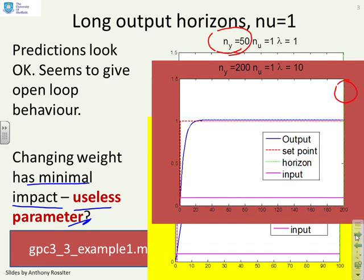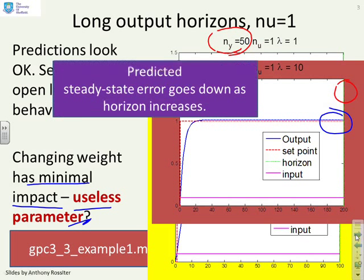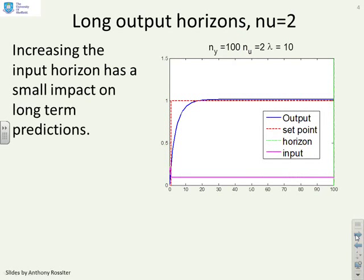If I go to ny equals 200 you'll see that the steady state error gets smaller again. So what are you noticing? That the predictions seem to be OK. In this case if I've got a large output horizon the predictions are matching the sort of thing that I want and everything looks reasonable. You've also noticed that the predicted steady state error goes down as the horizon increases.